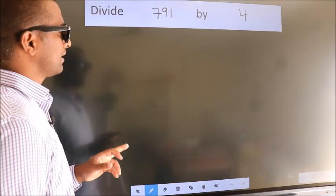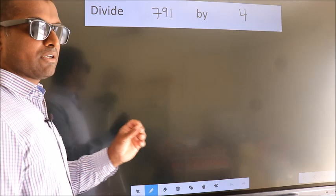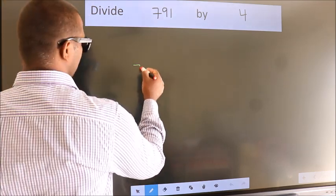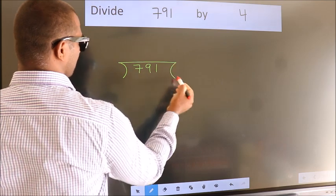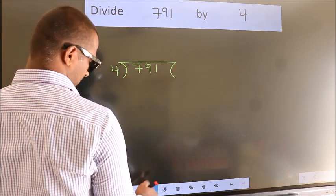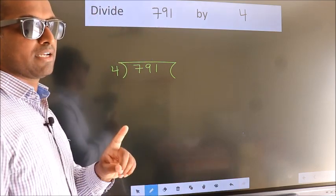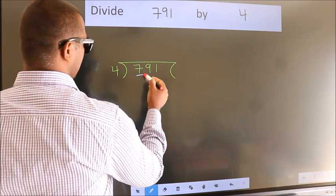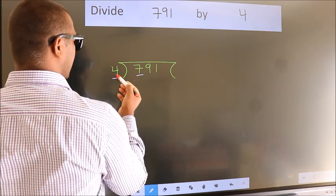Divide 791 by 4. To do this division, we should frame it in this way: 791 here, 4 here. This is your step 1. Next, here we have 7 and 4. A number close to 7 in the 4 table is 4 once 4.